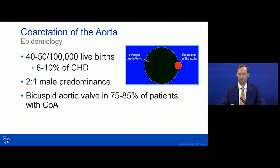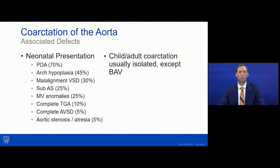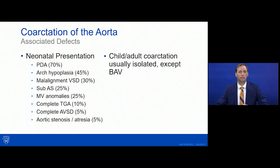The presentation of coarctation depends upon other things going on. When it shows up in neonates, it typically means a more severe lesion, often with a ductus of necessity to maintain lower-body perfusion. More severe coarctation is also associated with arch hypoplasia. Other lesions presenting with murmur may push the timeline of presentation earlier — lesions such as posterior malalignment VSD and other LV outflow obstructive lesions.